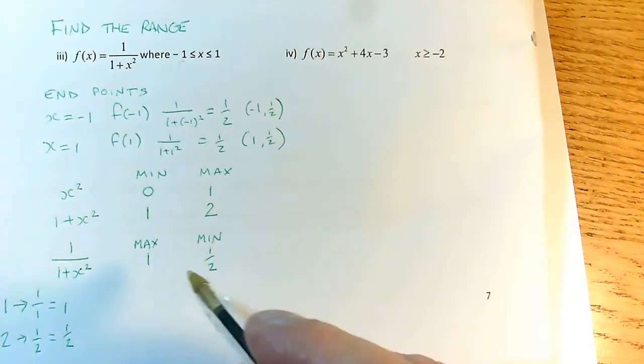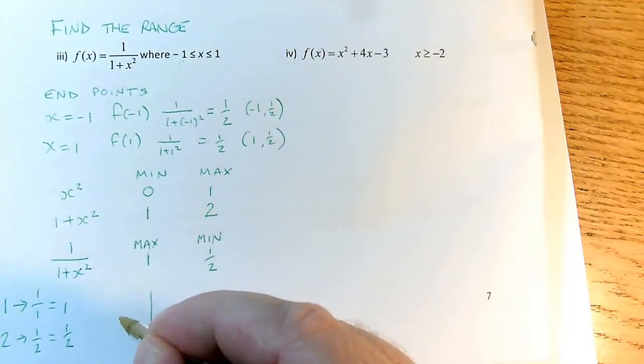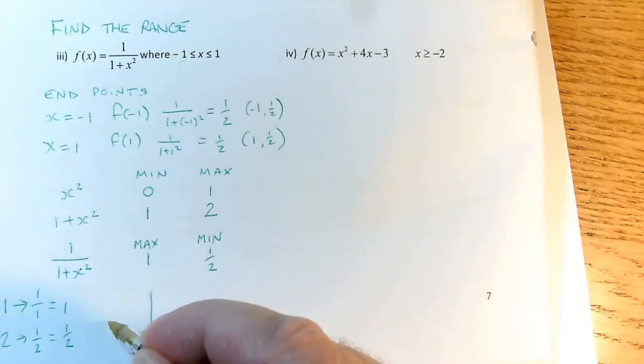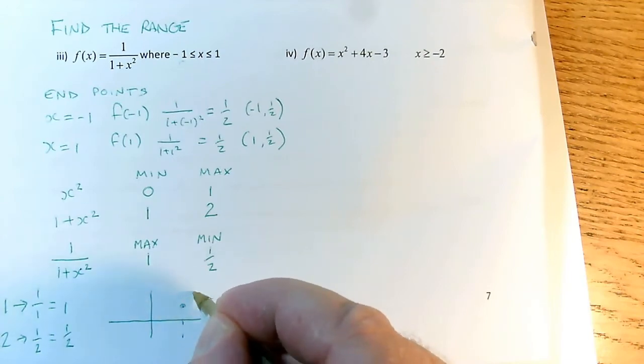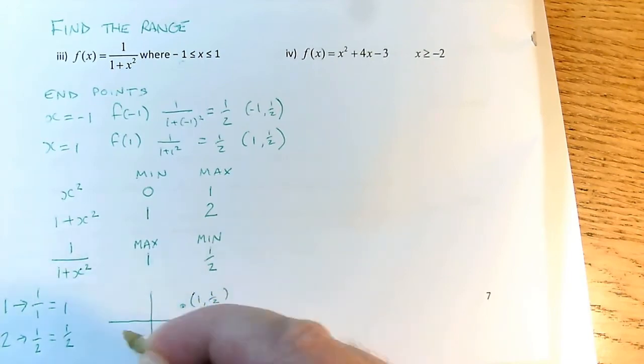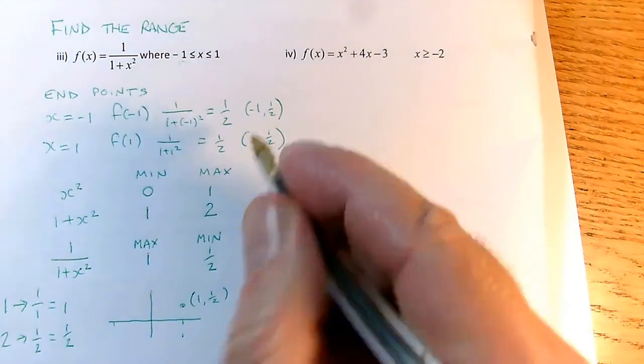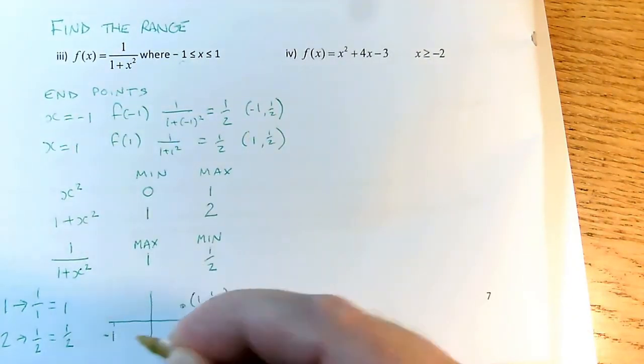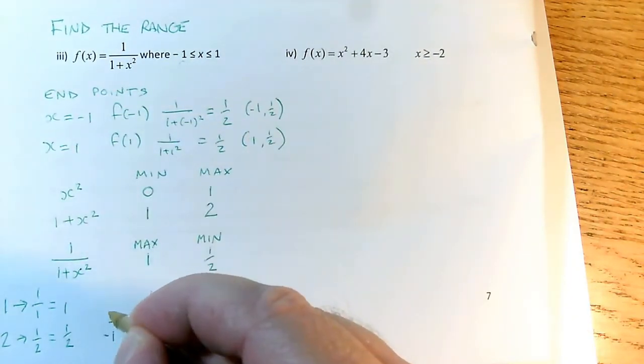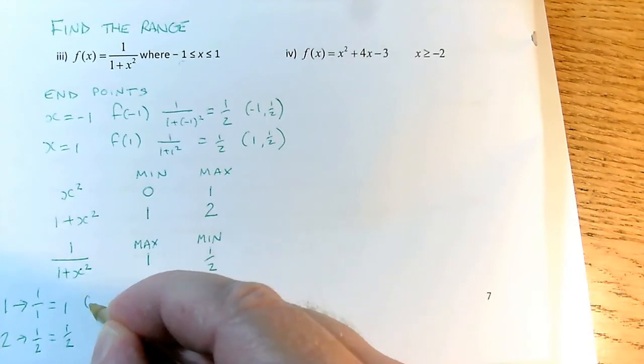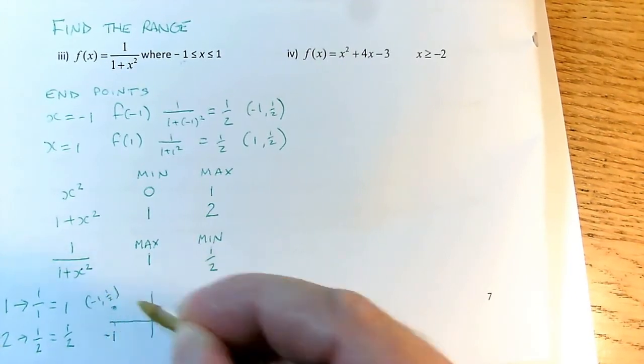So as well as my endpoints on my graph, I'm not going to necessarily get a perfect sketch of this, but I know that on my endpoints I've got 1, a half, so this is the point 1, a half, and I also had the other endpoint was minus 1, also with a y-coordinate of 1 half, so that's going to be over here, minus 1, a half.